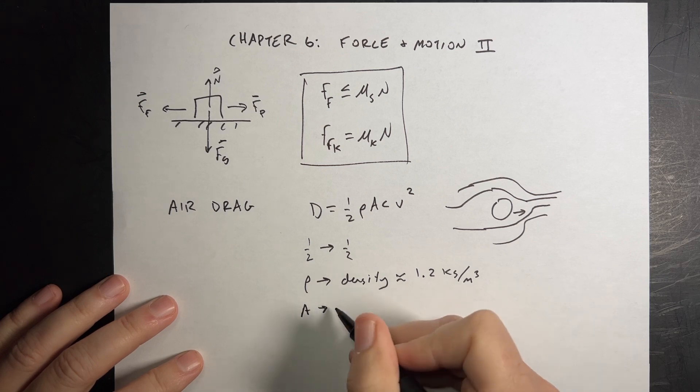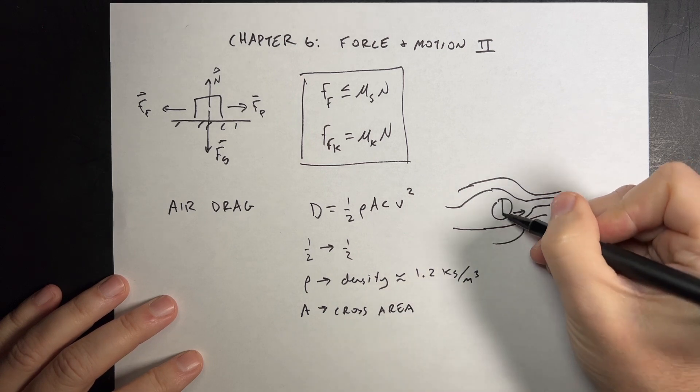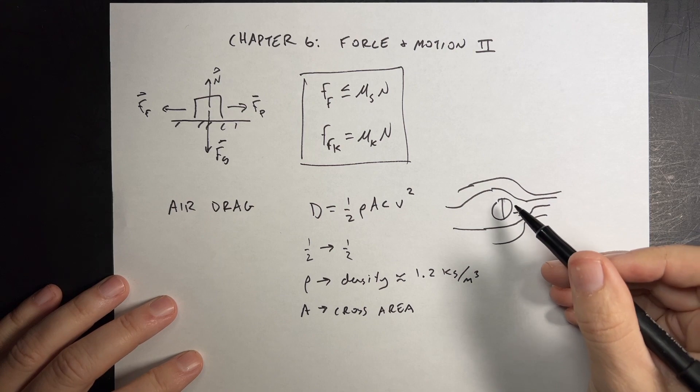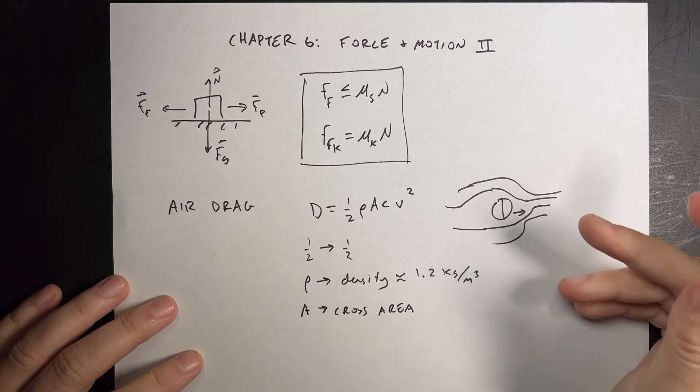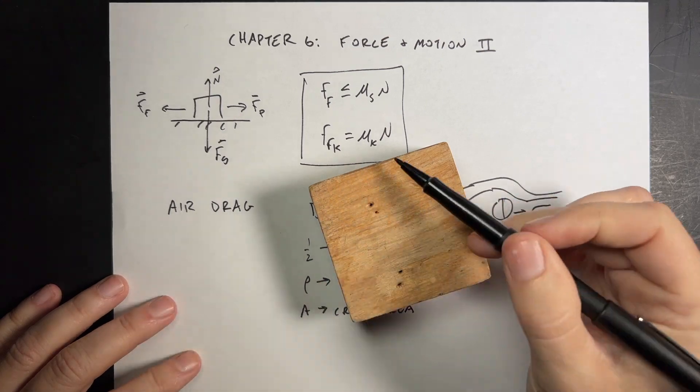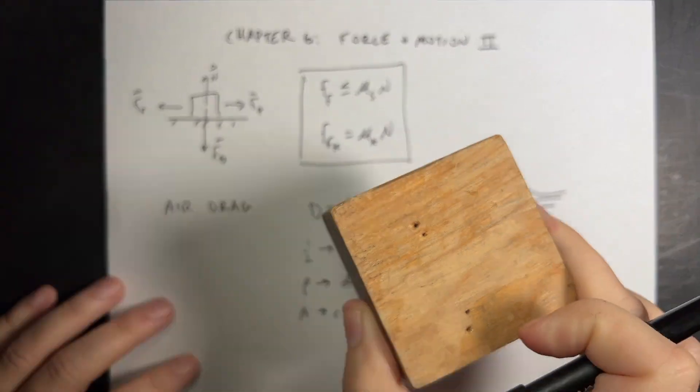A is the cross-sectional area of the object. Right? So if I have a sphere, then this would be a circle, right? Because if you're looking at an object that's a sphere, it's a circle. If I have this block moving through the air, then this would be the surface area if it's moving that way. Well, look at that.